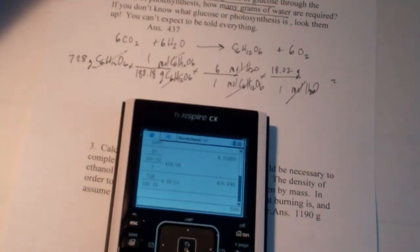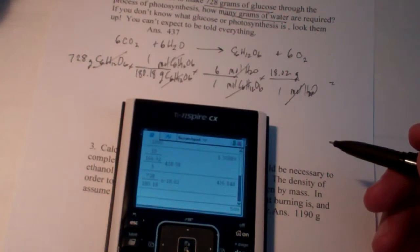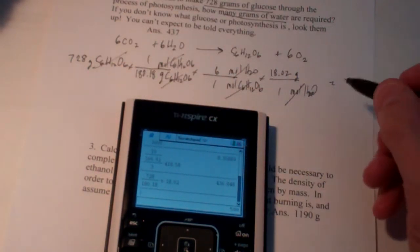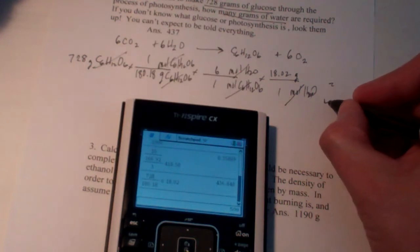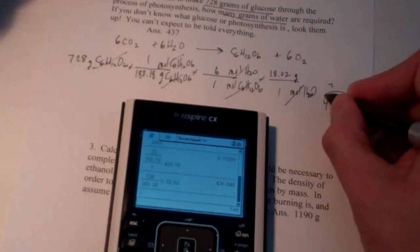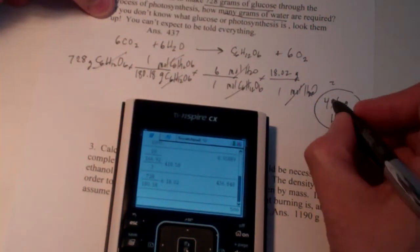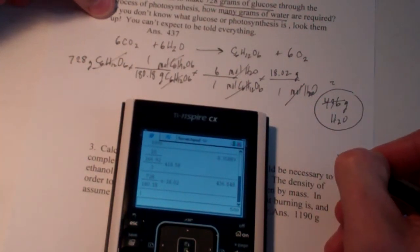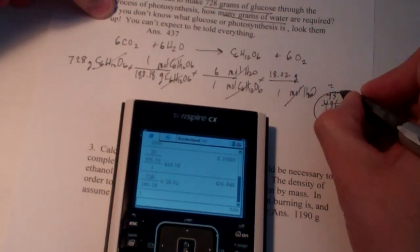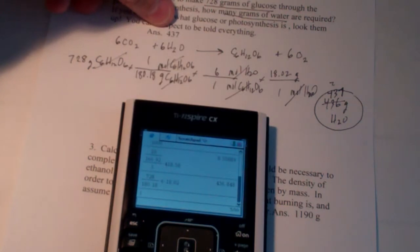Then moles of water to grams: 1 mole of water has a molecular weight of 18.02 grams. So: 728 divided by 180.18, times 6, times 18.02 — my calculator says 436.848, but we're only allowed 3 significant figures, so that rounds to 437 grams of water, which matches the answer key.